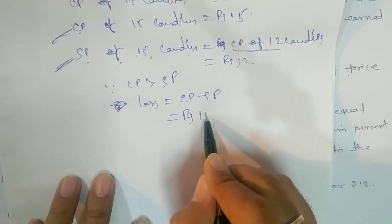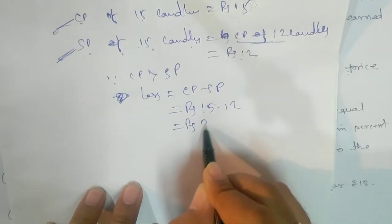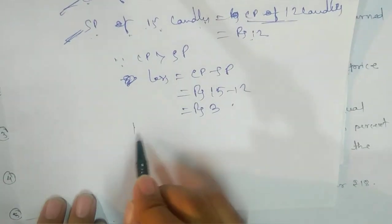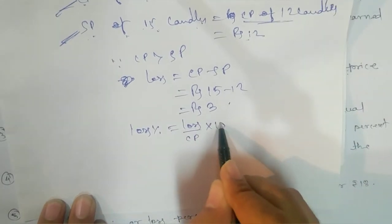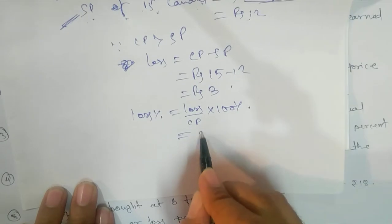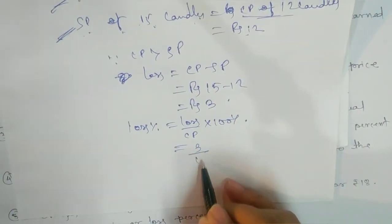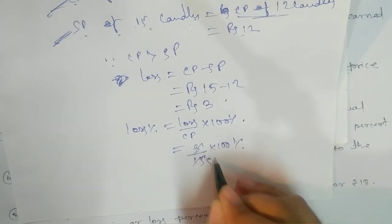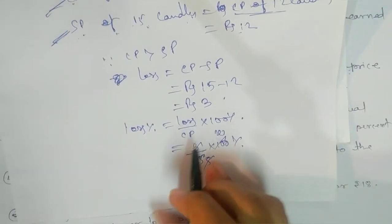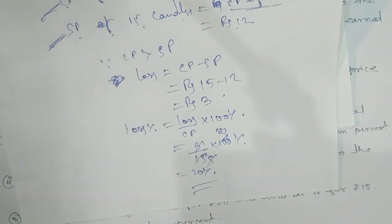Loss percent = (Loss / CP) × 100% = (3 / 15) × 100% = 20%. So the loss is 20%.